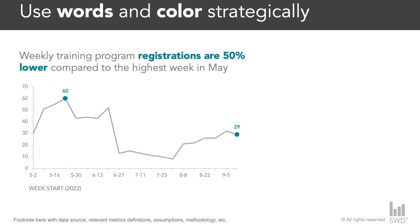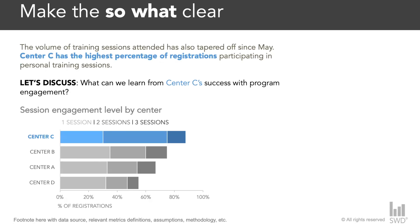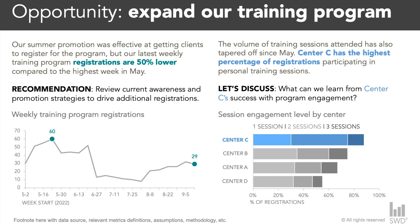Switching to our view of session engagement by location — notice we are using the same color in our emphasized words at the top that we use for the key points in the graph. This creates a visual link letting the viewer know how the data and the recommendations tie together. These relatively easy changes make the data insights and next steps more obvious to our audience, making that data story unmistakable.